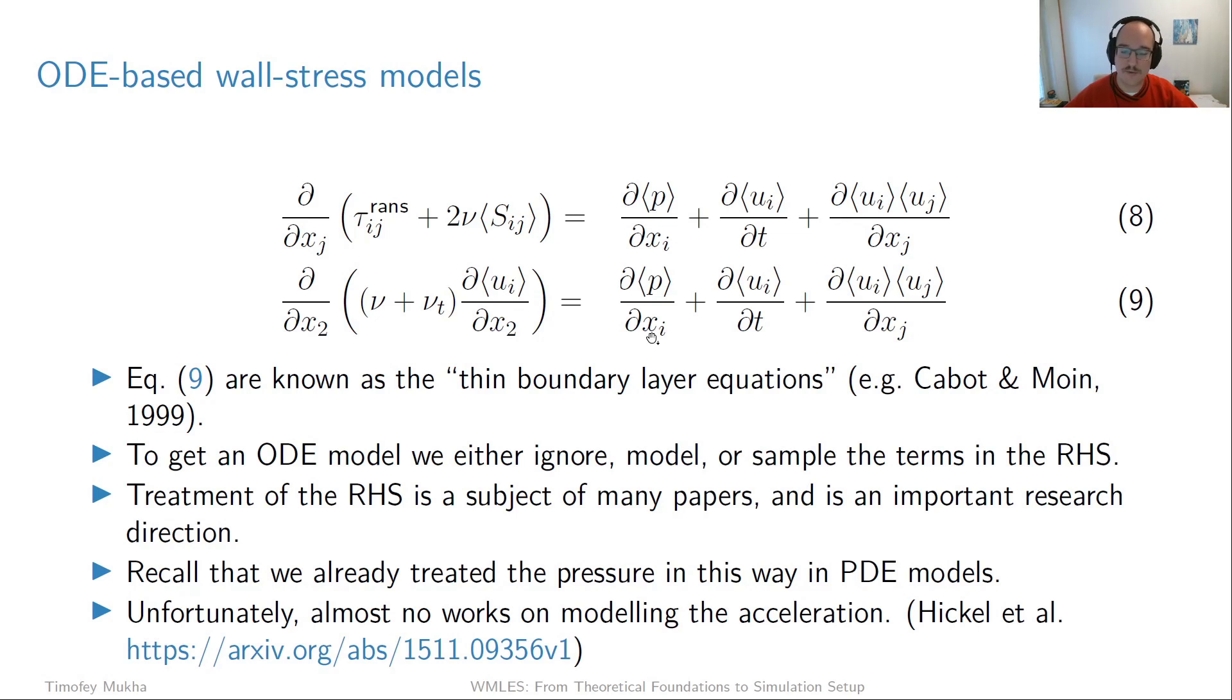Recall how we treated the pressure gradient term in the PDE models. We assumed that the wall normal gradient of pressure is zero through the inner layer. We can sample the pressure gradient from the point where we get the LES solution at distance h from the wall, distributing it as a constant throughout the inner layer. We can do something similar for our ODE model as well.